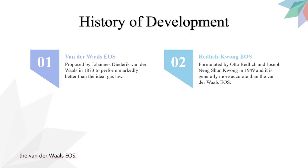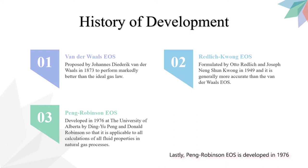Lastly, Peng-Robinson equation of state was developed in 1976 at the University of Alberta by Ding Yu Pang and Donald Robinson so that it is applicable to all calculations of all fluid properties in natural gas processes.